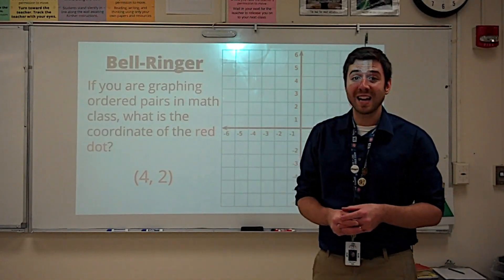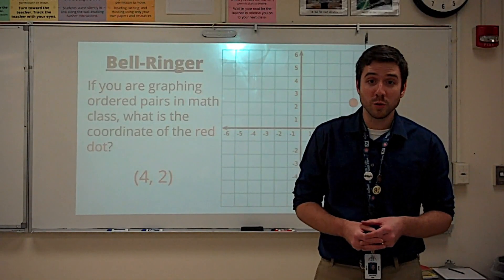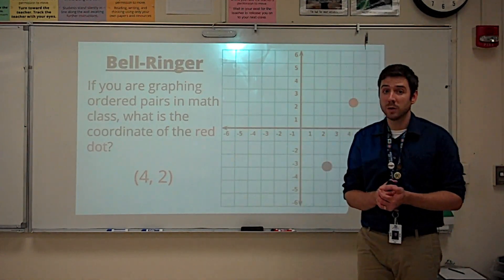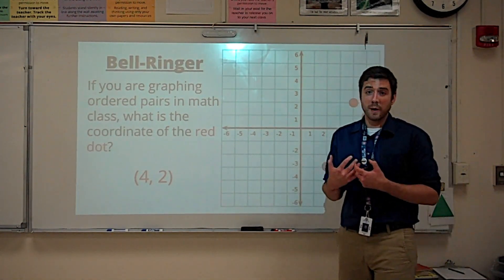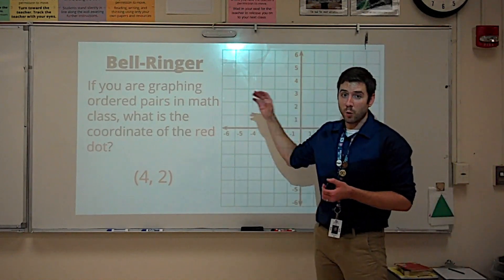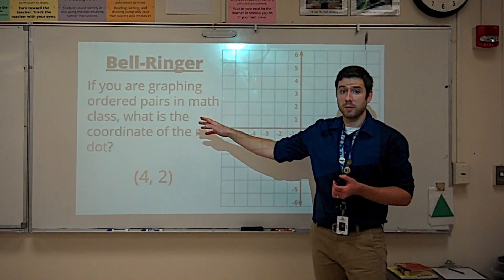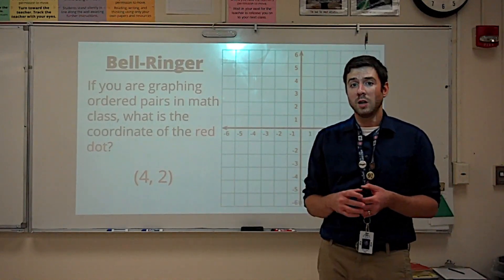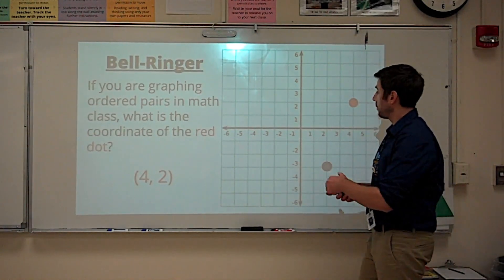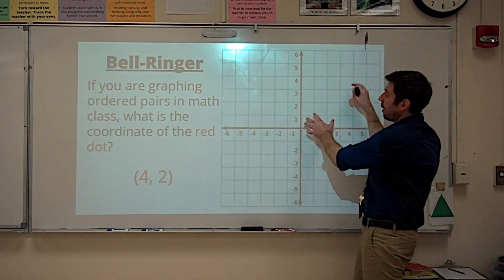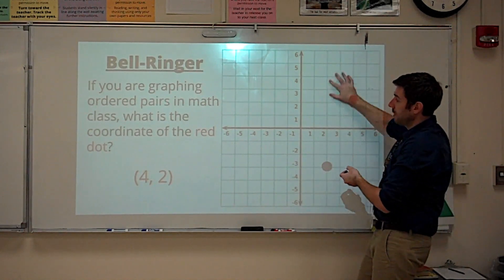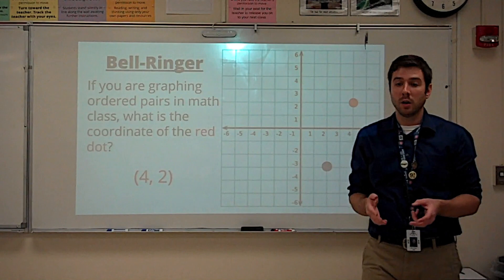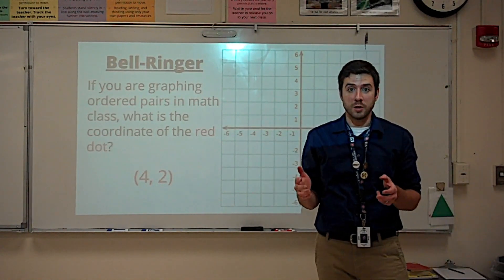If you're having trouble graphing latitude and longitude coordinates on a map, this video is hopefully going to help you. I always compare this to graphing ordered pairs in math. That's something most students have been doing for years. Sometimes you just kind of graph quadrant 1, but you get the idea of how to graph an ordered pair. It's very similar to latitude and longitude.